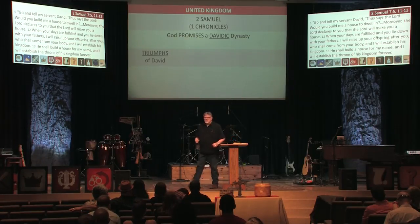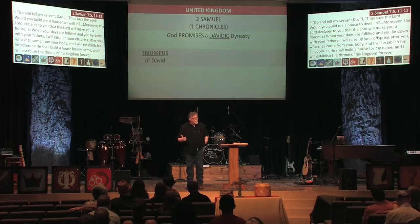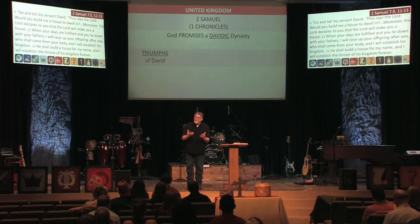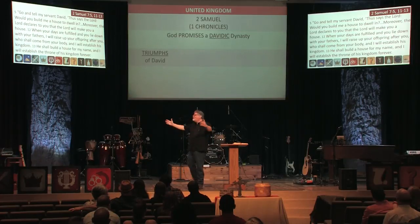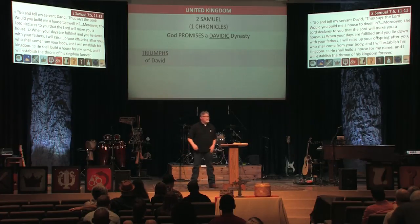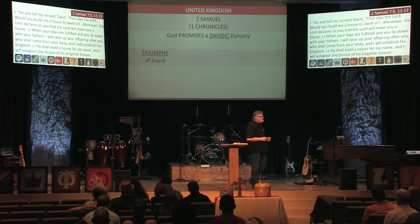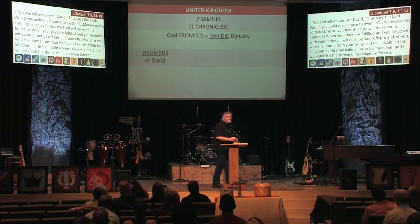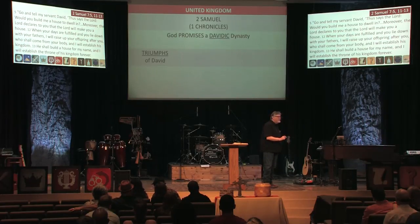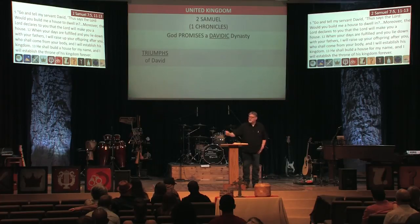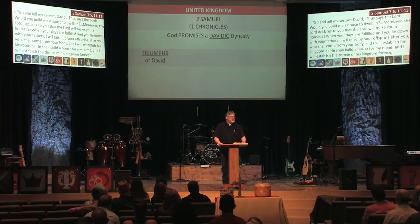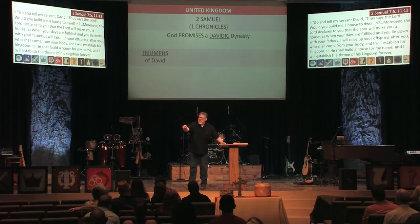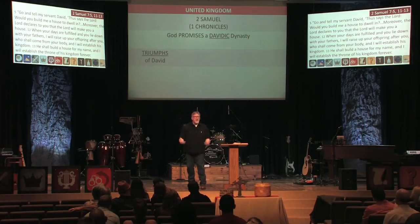In 2 Samuel, God sends Nathan in to rebuke David. Nathan tells a story to help David see emotionally how bad this was. He tells of a man who owned many sheep but had a neighbor who only had one little lamb that the family desperately loved and would sleep with and cuddle. A visitor came to the rich man, and he took the neighbor's little loved lamb and killed it to feed his guest. And David said, 'This man deserves to die.' And Nathan says, 'You are the man.'